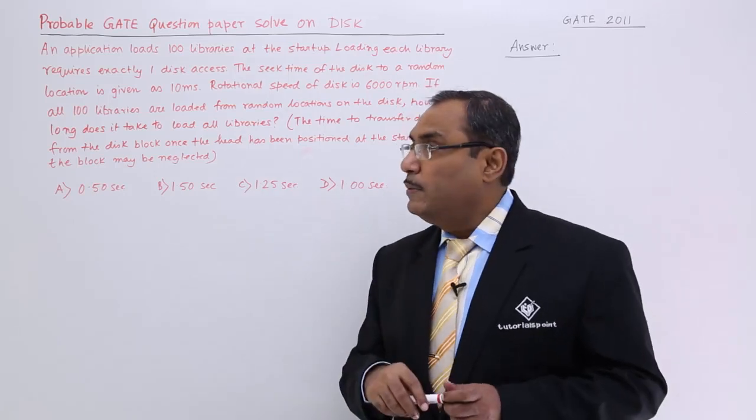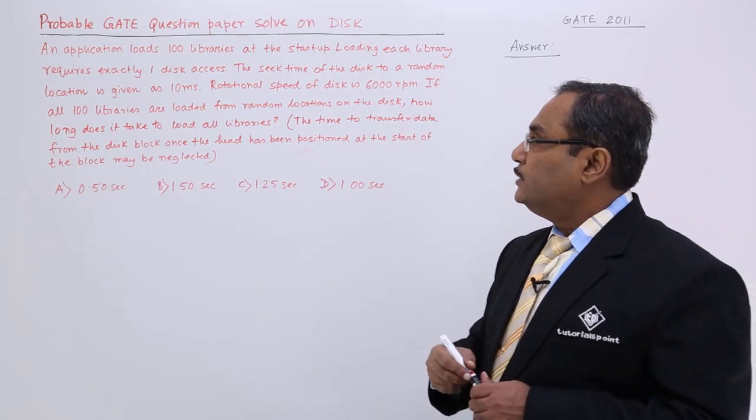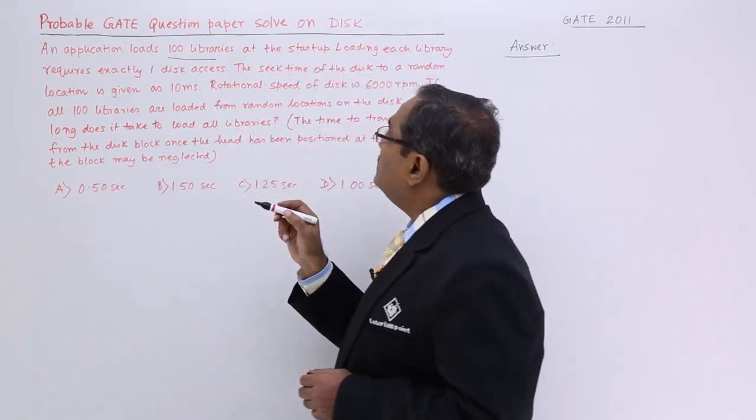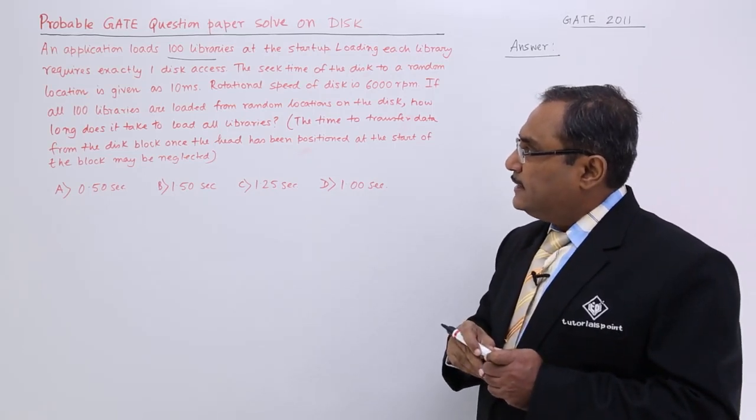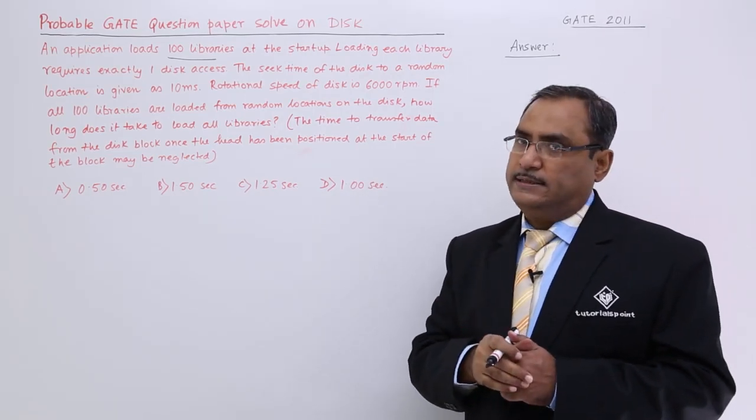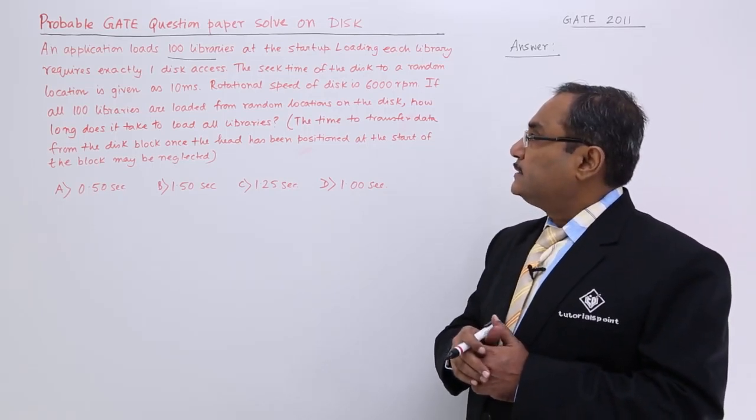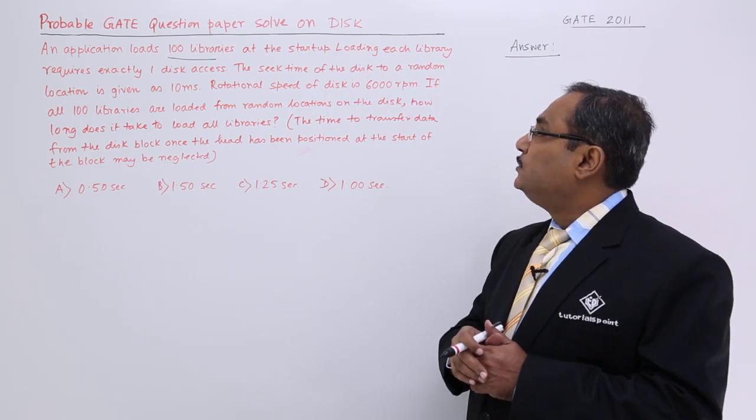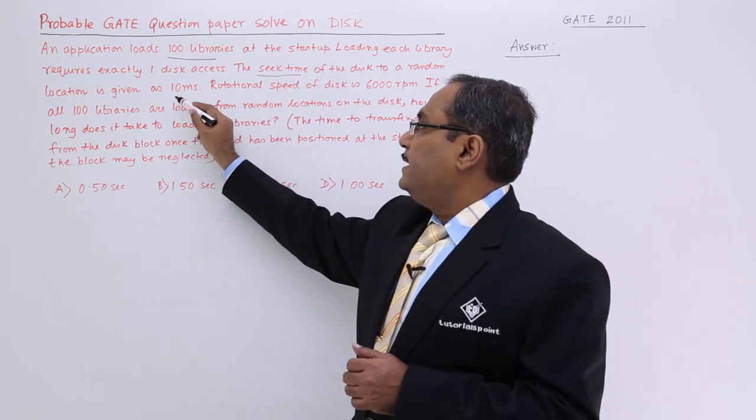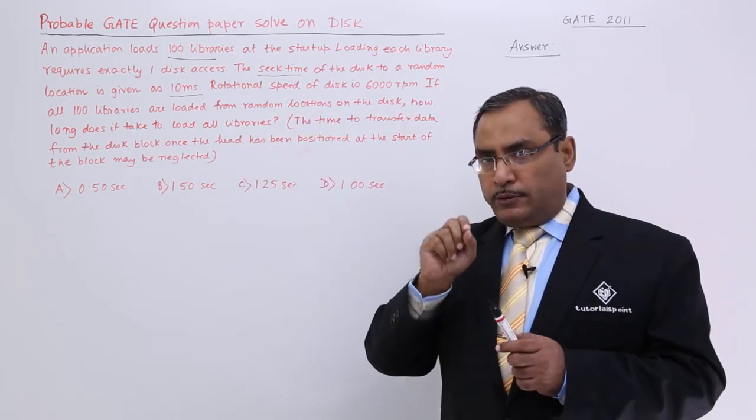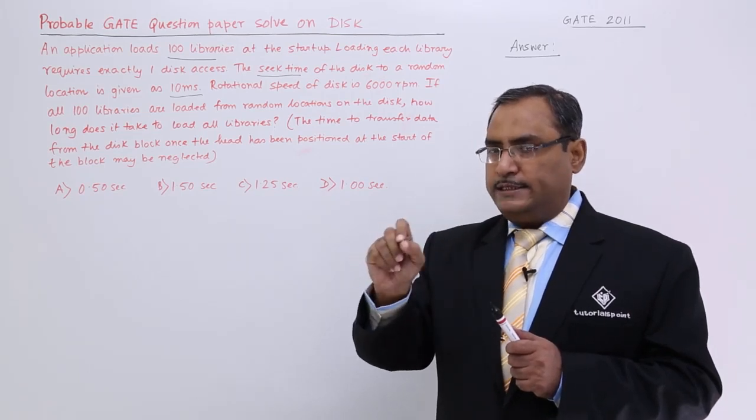Let me discuss the problem at first. An application loads 100 libraries at the startup. Loading each library requires exactly one disk access. So 100 libraries means 100 times disk access. The seek time of the disk to a random location is given as 10 millisecond. What is the seek time? To put the read head on the proper or desired track is known as the seek time.